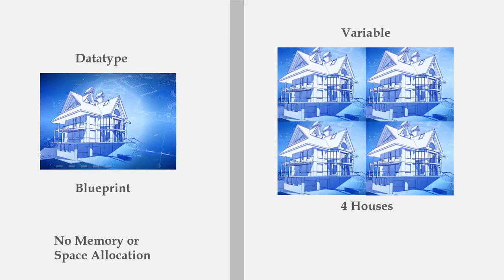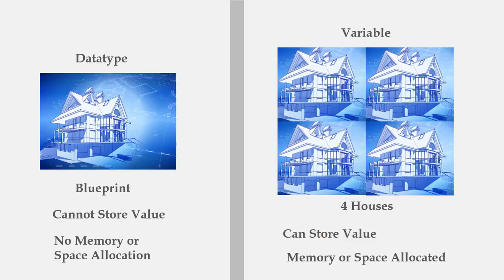In the case of a variable, since it is physically present, memory or space is allocated to it. You cannot store a value in a data type — it's just a basic plan, a structure — whereas in a variable we can store values, just like once a house is built we can store objects into it. A data type is virtual but holds properties like what is the data type of that field and what is the length, whereas a variable holds physical memory in space, and whenever a program is executed, certain bytes of memory are allocated to it.